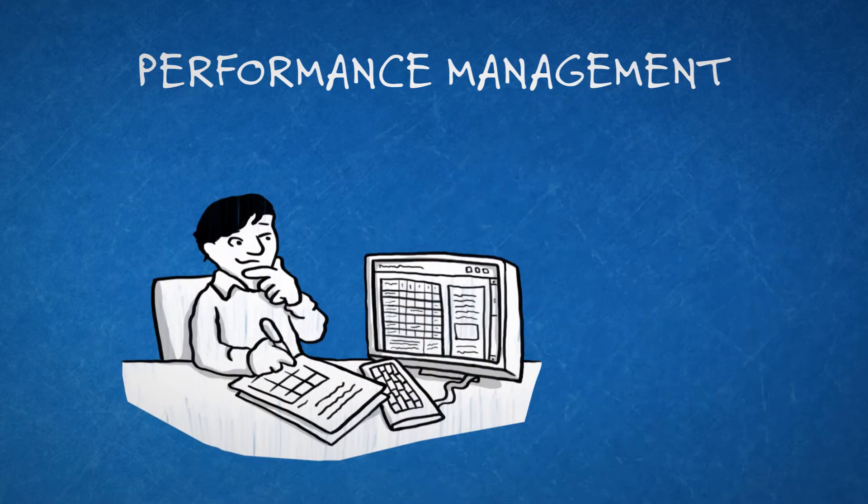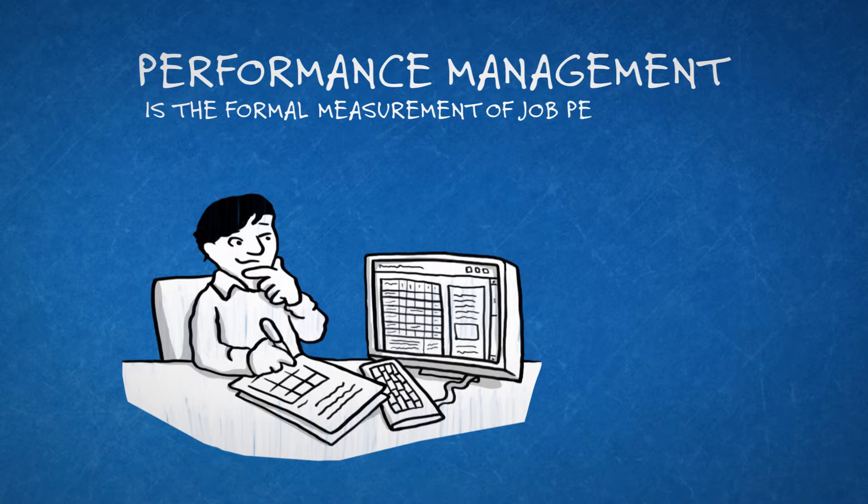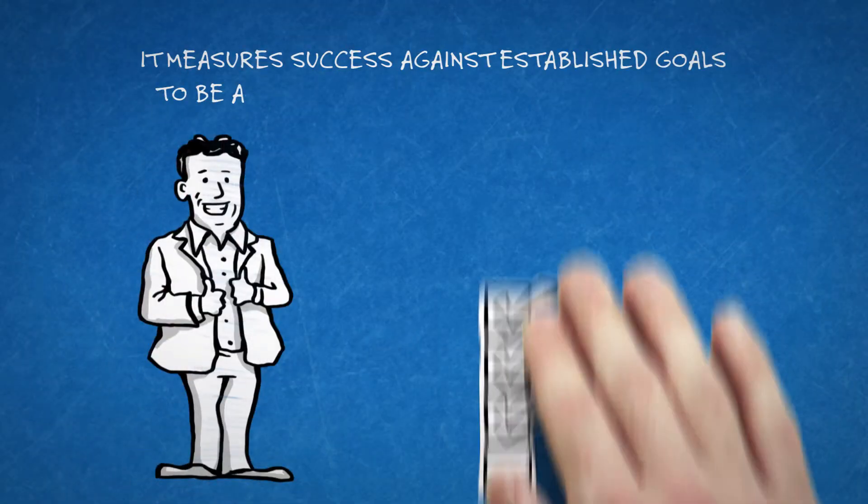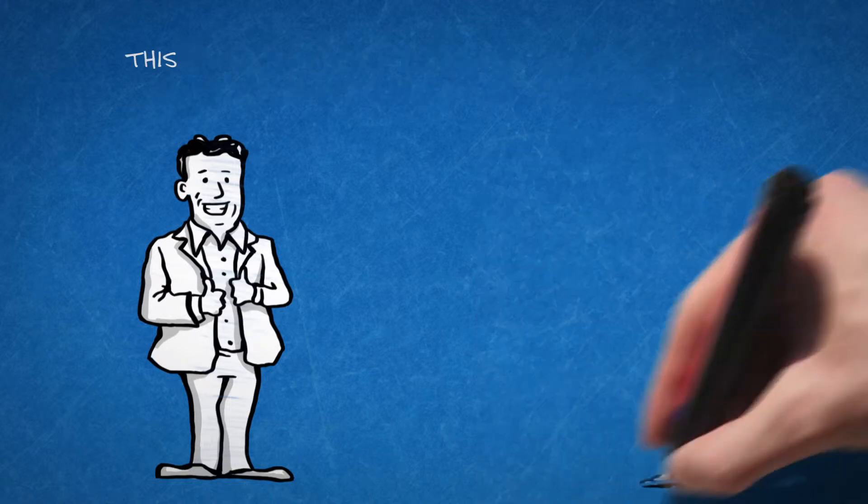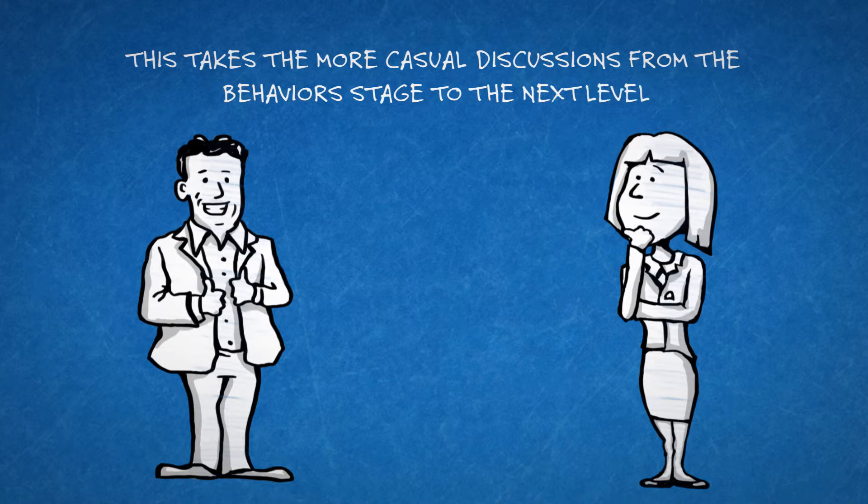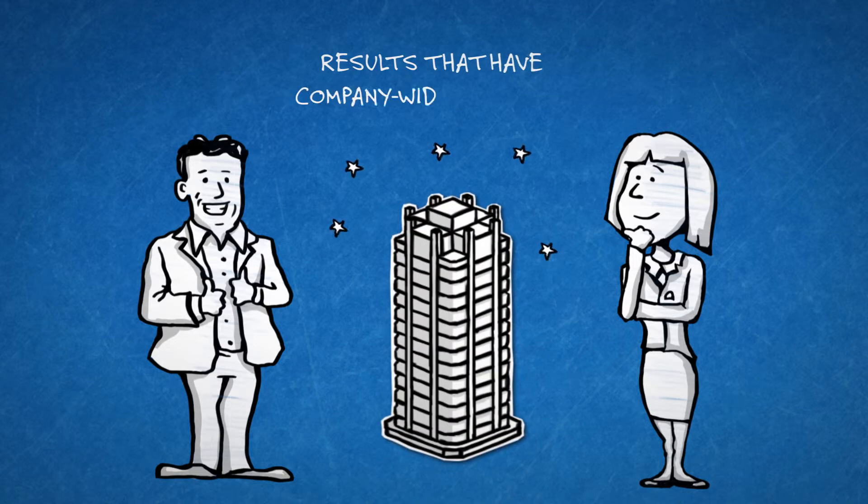Performance management is the formal measurement of job performance. It measures success against established goals to be accomplished over a set period of time. This takes the more casual discussions from the behaviors stage to the next level, with results that have company-wide benefits.